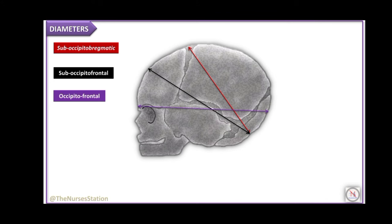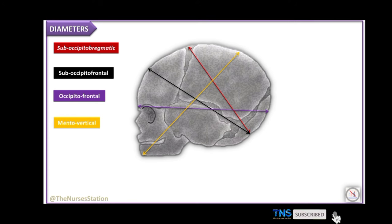Occipitofrontal extends from the occipital eminence to the root of the nose, measuring 11.5 centimeters — the engaging diameter in marked deflection of the head and vertex presentation. Mentovertical extends from the midpoint of the chin to the highest point on the sagittal suture, measuring 14 centimeters — the engaging diameter in partial extension of the head and brow presentation.